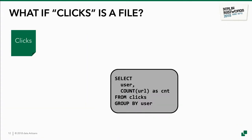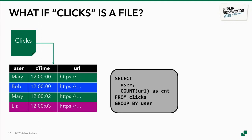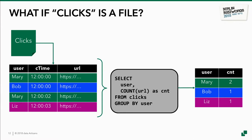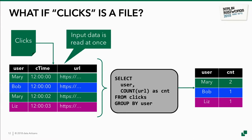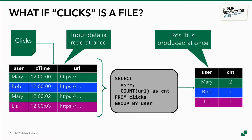If we now want to run this simple query on a table 'clicks' where clicks represents a file, we basically read the data from the file, give all the data into the query processor, and get a result. The input data is read once, and the result is also produced at once. This is the standard way of evaluating queries on batch data.